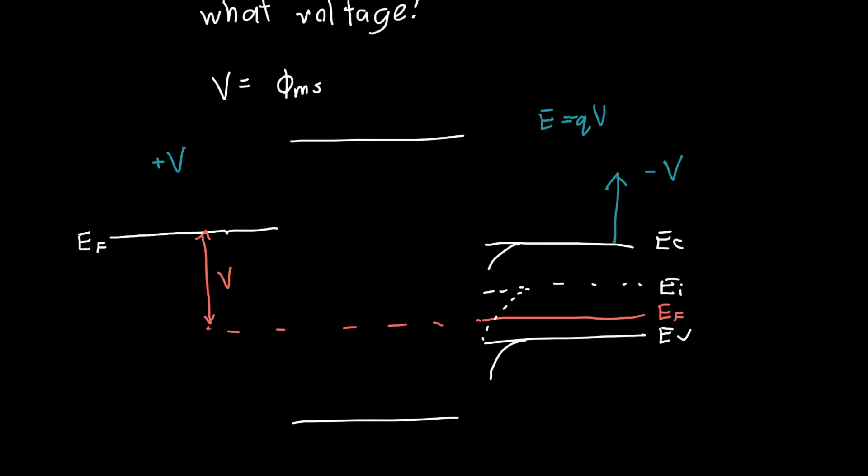So if we redraw our band diagram after we apply this positive voltage, it looks something like this. So the fermi levels will be closer together. Probably it depends on what the value of phi ms is but here we've assumed it's negative. We've got our conduction band, our valence band. Actually let me draw those a little smaller so we can bend them, and then our intrinsic fermi energy.